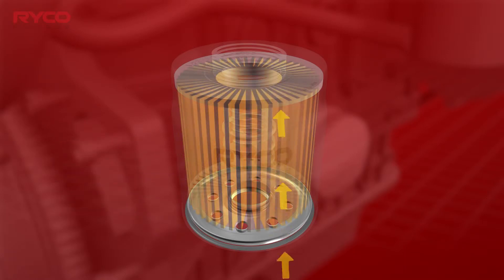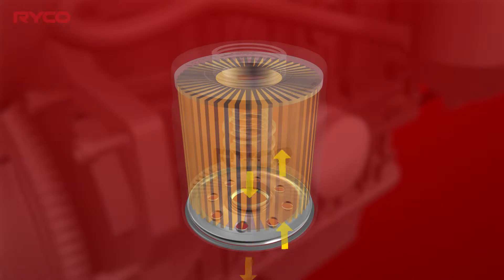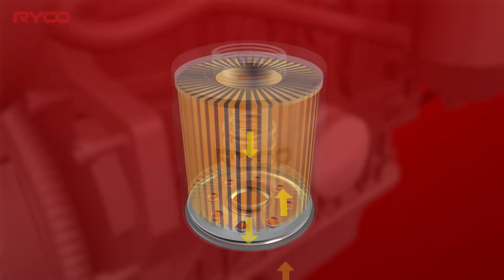The outer ports allow oil to enter the filter, pass through the media's outer circumference, deposit its contaminants and particles, and then exit the filter through the central port.